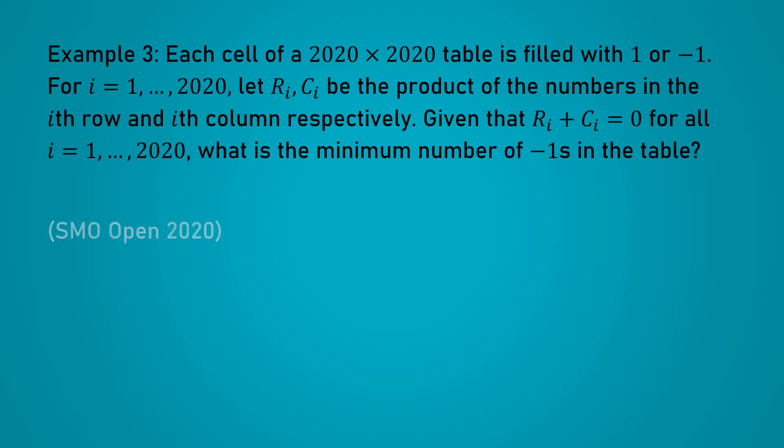For our last problem, let's look at a more combinatorial one to illustrate this idea. We are told that a 2020 by 2020 table is filled with 1s and negative 1s. For each row and column, we tabulate the product of the numbers, which clearly would be also 1 or negative 1. And then, we are given the condition that ri plus ci equals 0 for all i, which means that these products sum to 0 for the first row and column, second row and column, and so on. Pause the video for a moment if you would like to think about this on your own.